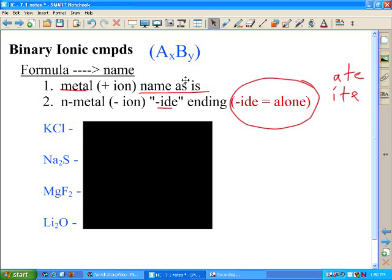So four very simple chemicals here that just by knowing those two rules, we should be able to name those four. Name the metal as is. Name the nonmetal gets the ending IDE. Don't do anything else. So we have KCl, NA₂S, MgF₂, and Li₂O.